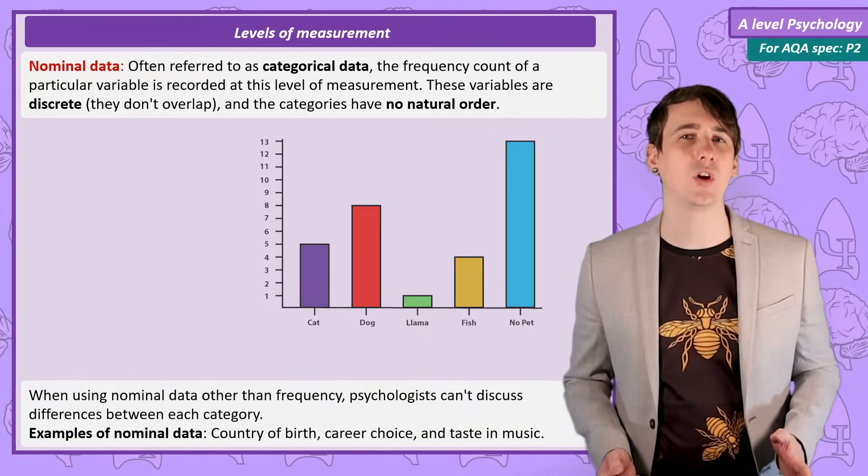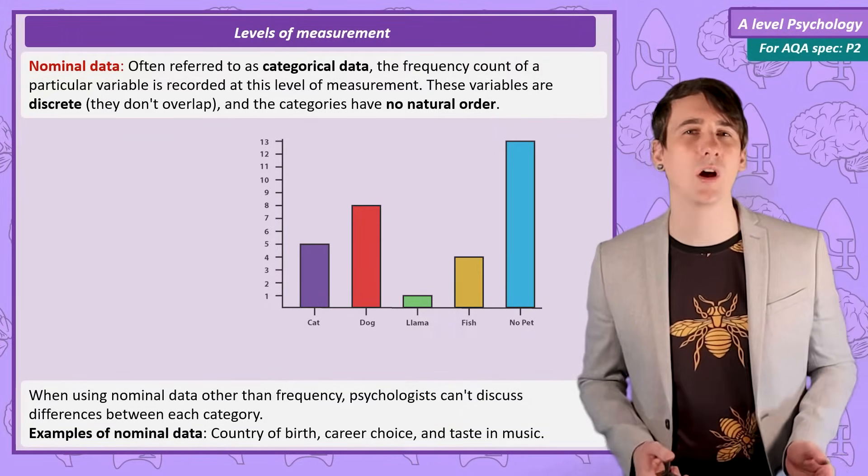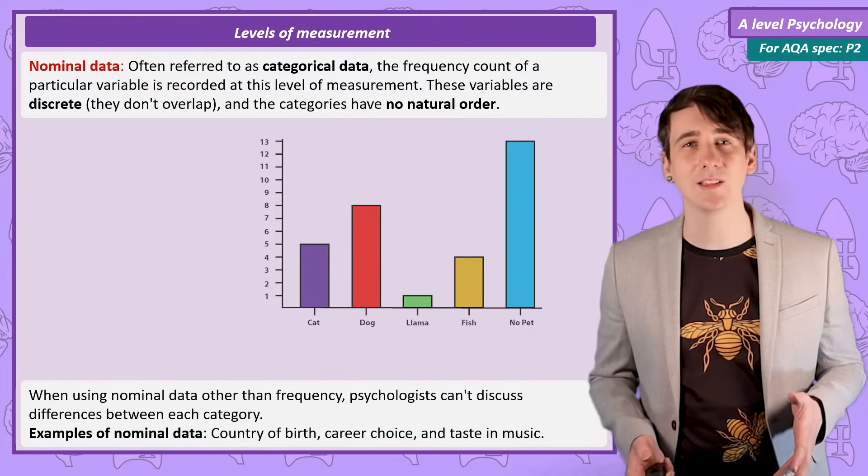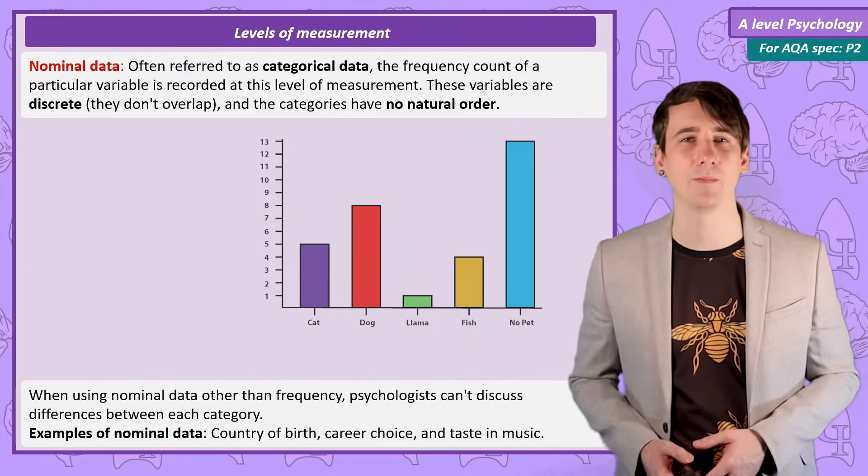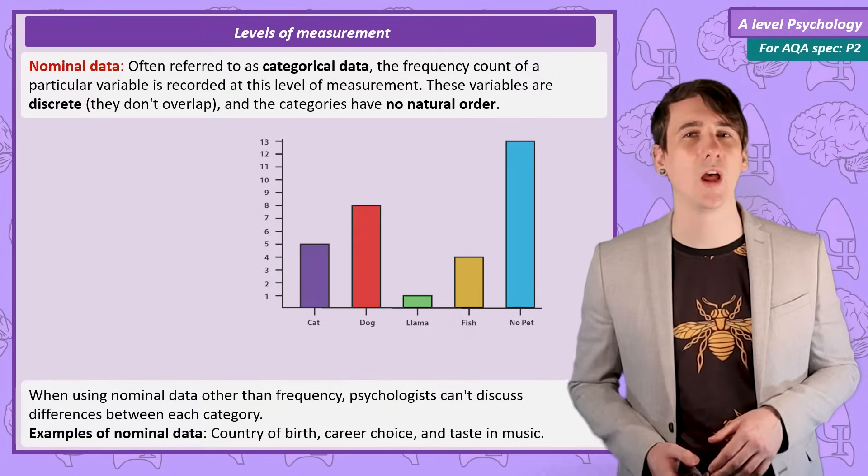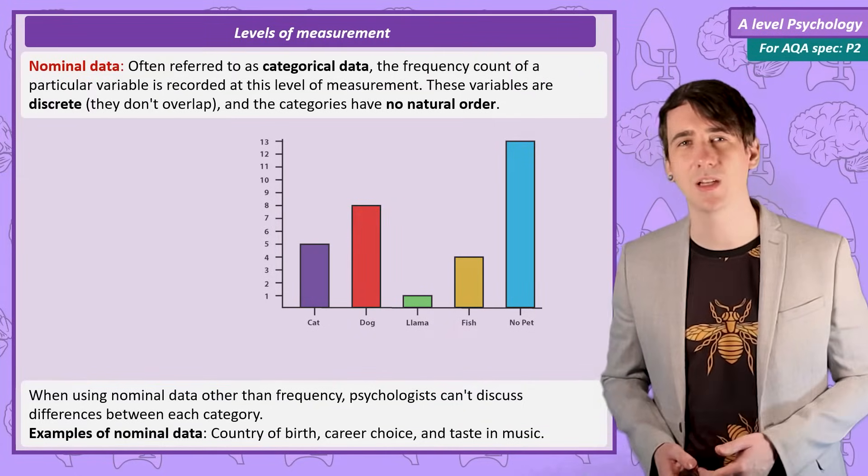For example we can't say a dog is worth half of a fish, but we can't say a llama is worth a quarter of a cat. The categories are distinct and simply don't interact with each other in that way. Other examples of collecting nominal data is recording career choice, country of birth or taste in music.